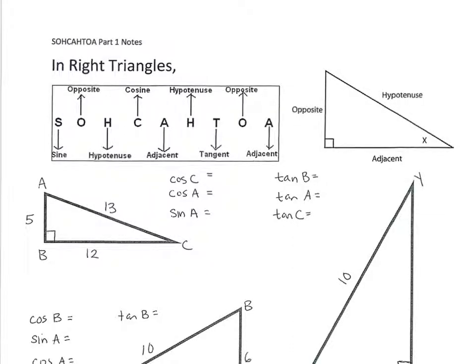This section is the beginning of trigonometry. In right triangles, the sine means it's the ratio — so ratio means a fraction — of the side opposite divided by the hypotenuse.